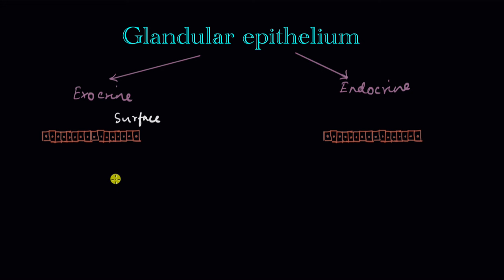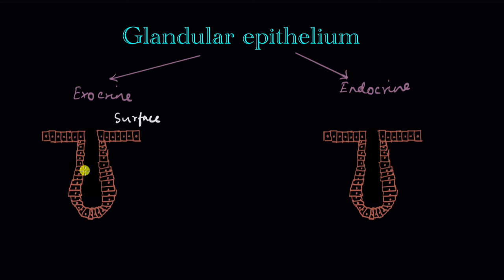Both the exocrine and the endocrine types of glandular epithelium start out with a regular epithelium, and then they start growing downwards away from the surface — inward in order to form the gland. They form a shape such that there is a space inside, like a tube, and this space is called the duct. Both types initially have this duct, but it stays in exocrine glands whereas in endocrine glands it disappears.